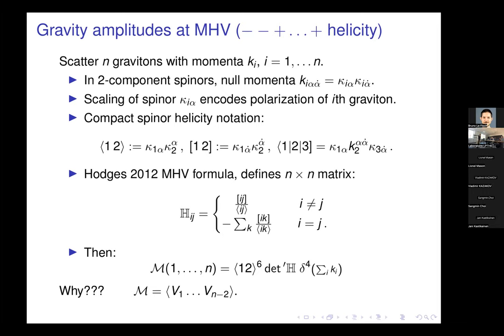You take the square bracket of the (i,j) momentum spinors divided by the angle bracket, forming this matrix H_ij whose off-diagonal entries are just that term, and then the diagonal terms are designed so that the row sums add to zero. This matrix is actually degenerate, but you can define a reduced determinant once you know what its kernel is. Apart from a factor out front to make the weights right — where particles 1 and 2 are the negative helicity gravitons — that's basically all there is to the MHV amplitude.